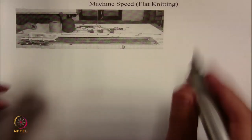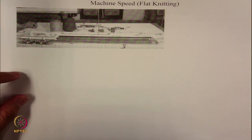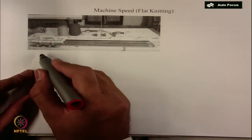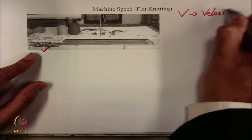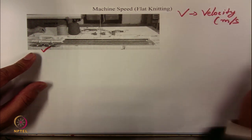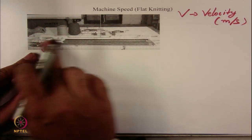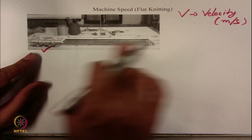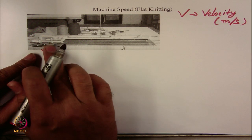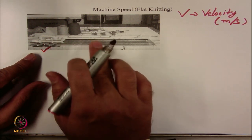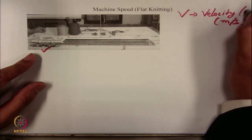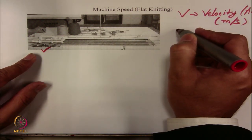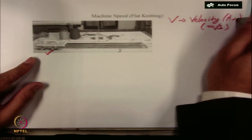Let's derive these formulas — it's very simple steps and you will be able to figure out how the formula comes. The first variable is the velocity or speed of the carrier in meter per second. We have taken the average speed because the velocity starts from 0, reaches the highest point somewhere in the middle of the bed, and then goes down to 0 again. That's why we take the average speed — please remember this.